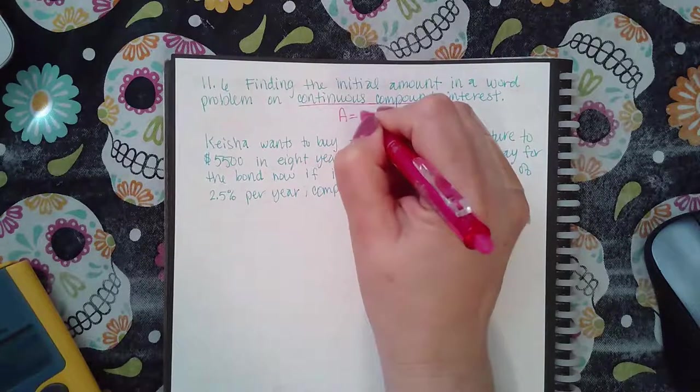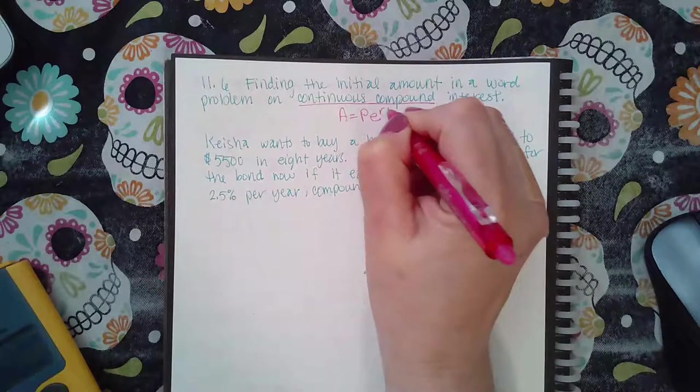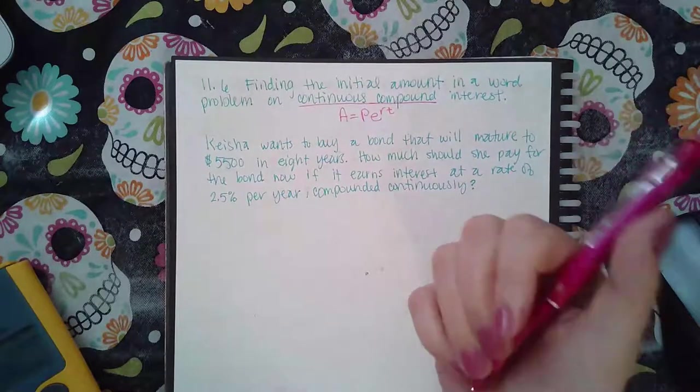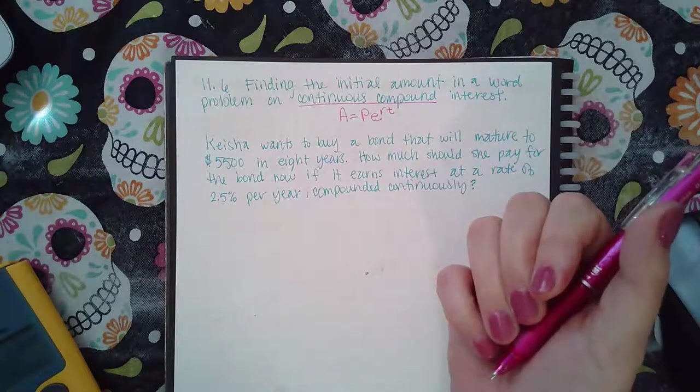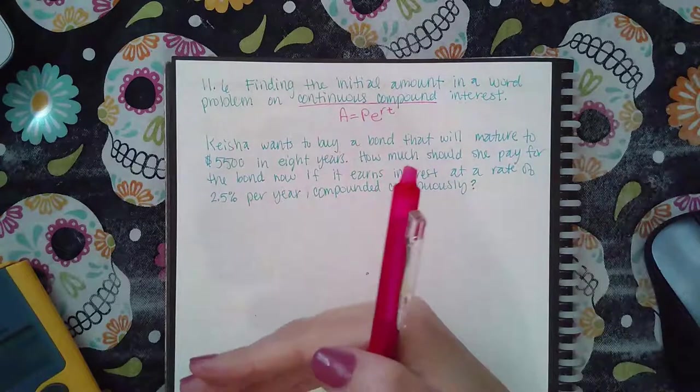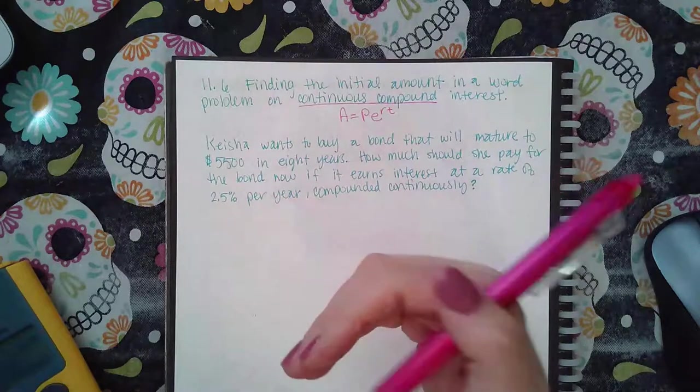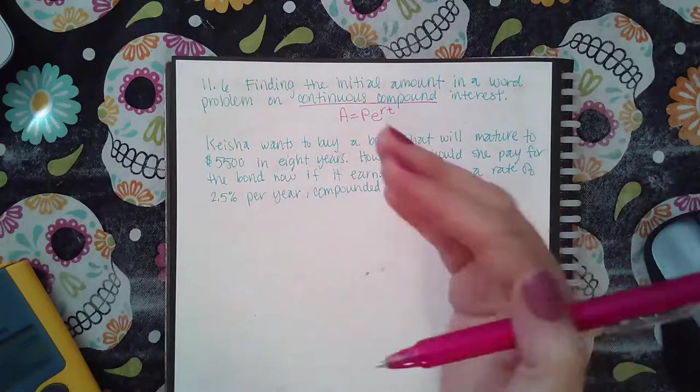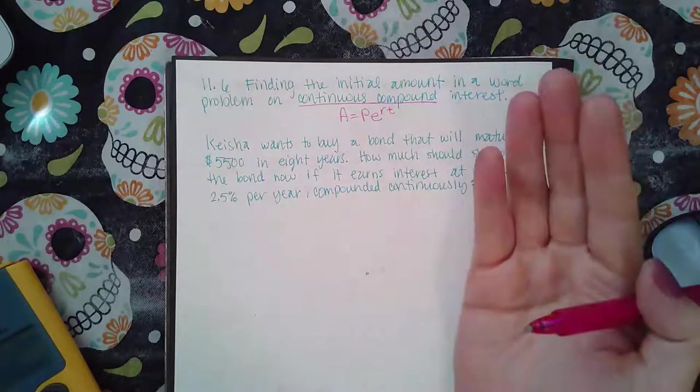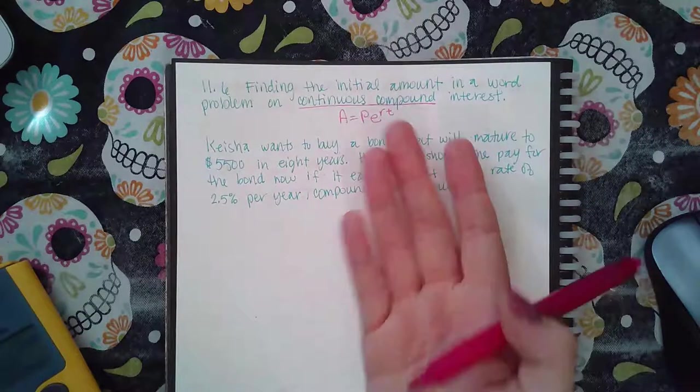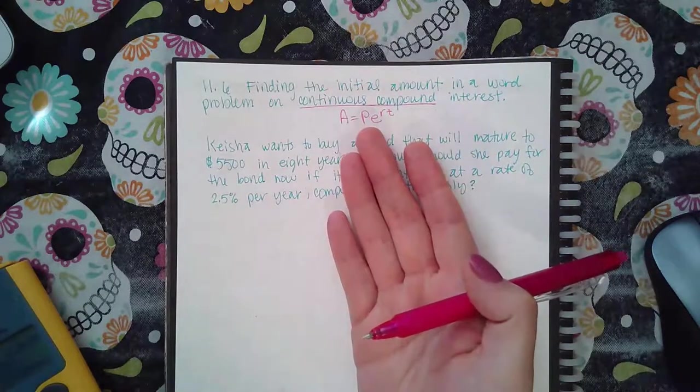It's A equals P times e to the RT. So there's exponential growth or decay, which is A equals P times one plus or minus R to the power of T. Then there's compounded, which is A equals P times parentheses one plus R over N close parentheses to the power N times T. And then you have continuous compound interest, which is A equals P times e to the RT.